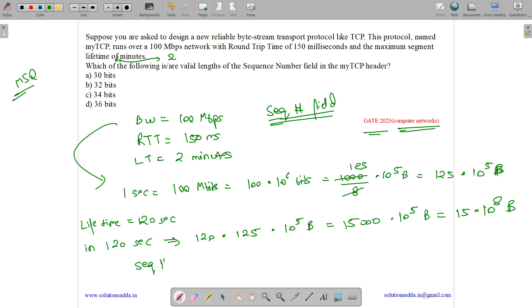So what is the sequence number? Sequence number bits are always greater than or equal to log base 2 of the upper bound of lifetime bytes that can be transferred. So it will be greater than or equal to log base 2 of 15 × 10^8 upper bound.